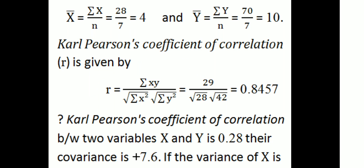So R is equal to summation xy divided by the square root of summation x-squared into summation y-squared. We need to calculate summation xy, summation x-squared, and summation y-squared to find the correlation coefficient.